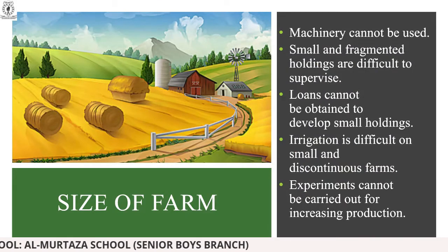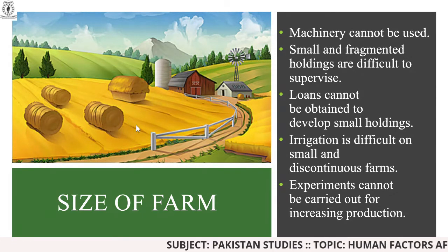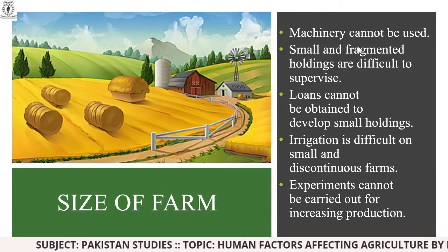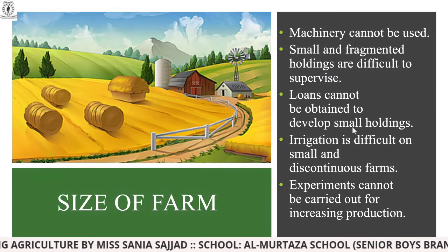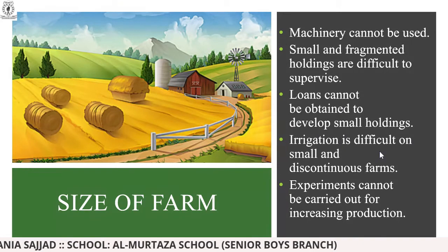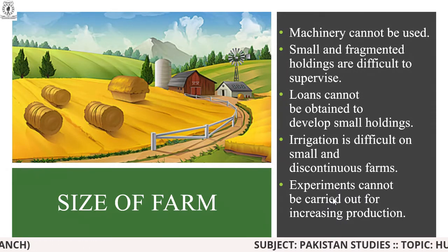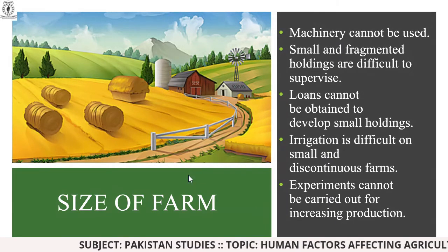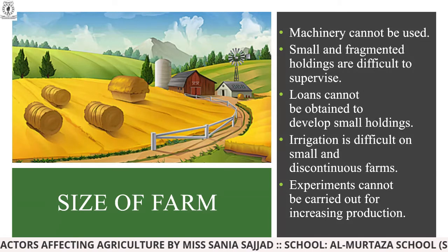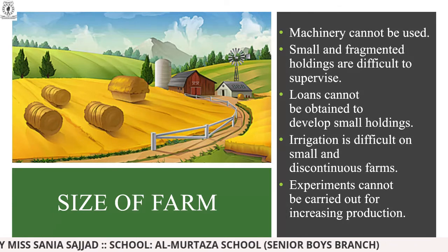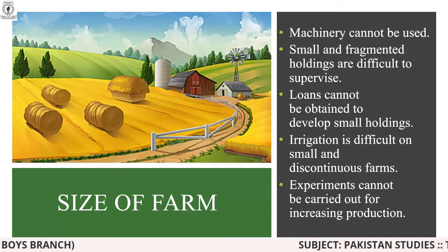Coming towards the size of farm: you can see the picture showing different fields. Machinery cannot be used on small farms. Small and fragmented holdings are difficult to supply, loans cannot be obtained to develop small holdings, irrigation is difficult on small and discontinuous farms, and experiments cannot be carried out for increasing production. You cannot use machinery — whatever you have to do must be done by hand.